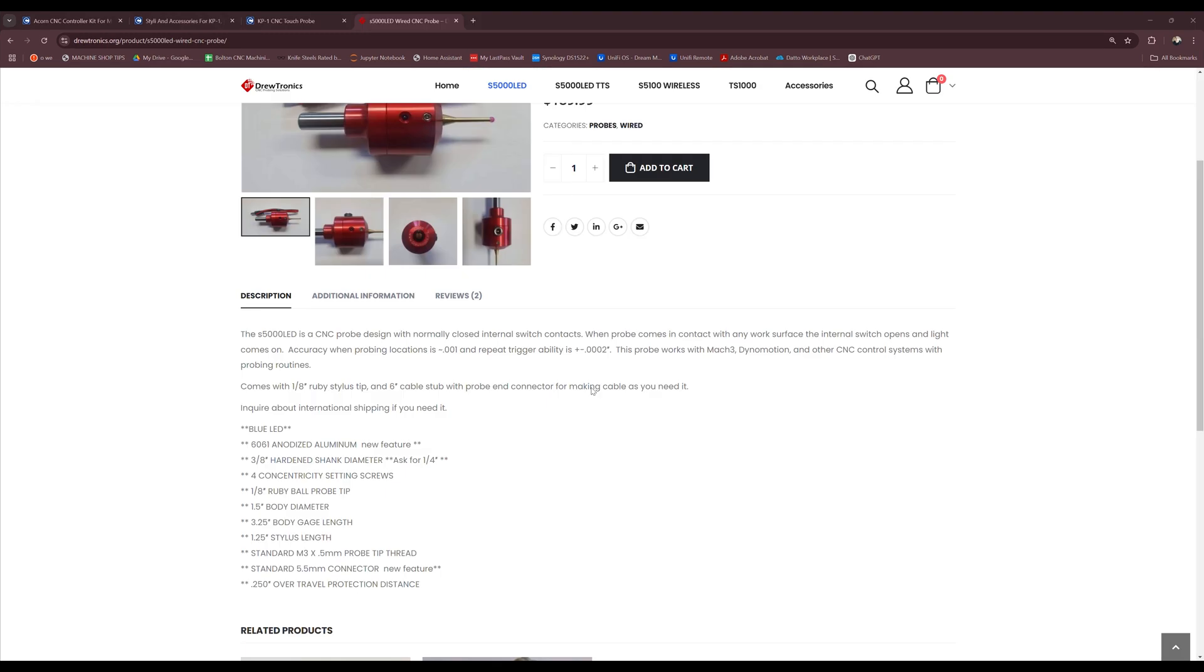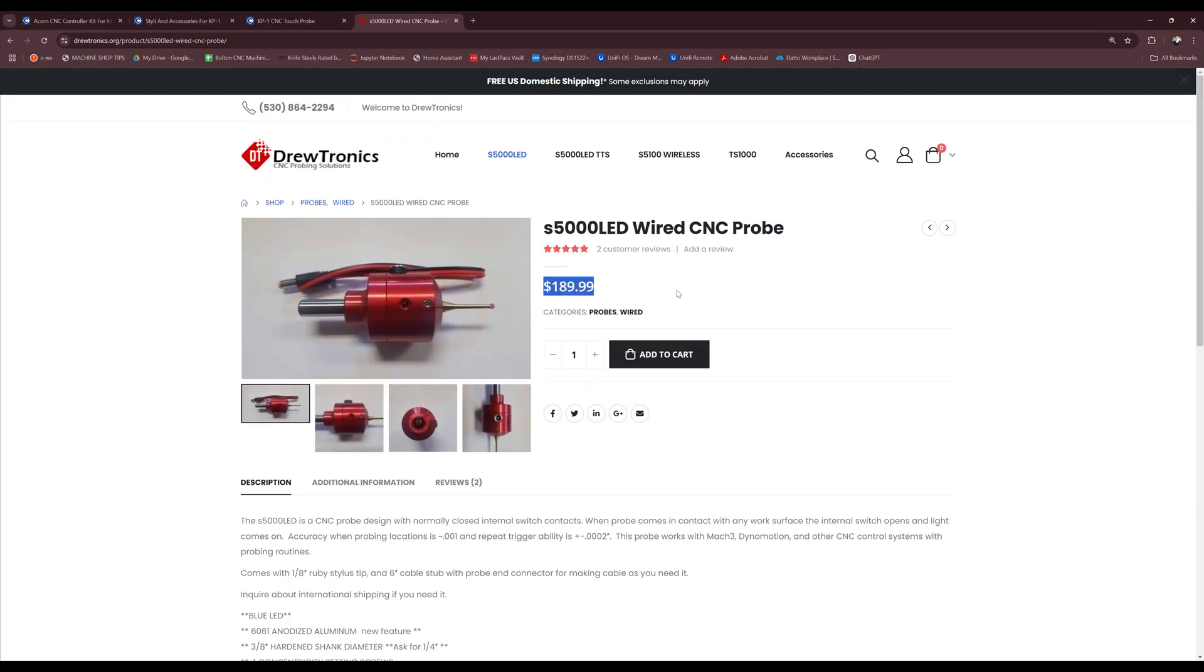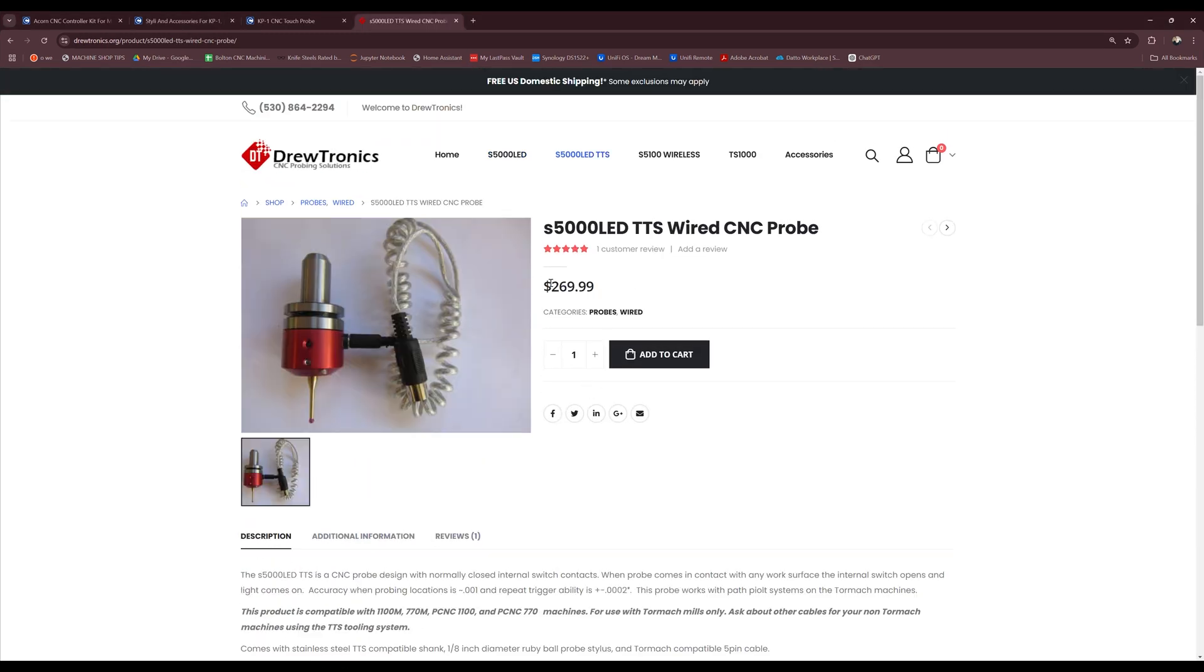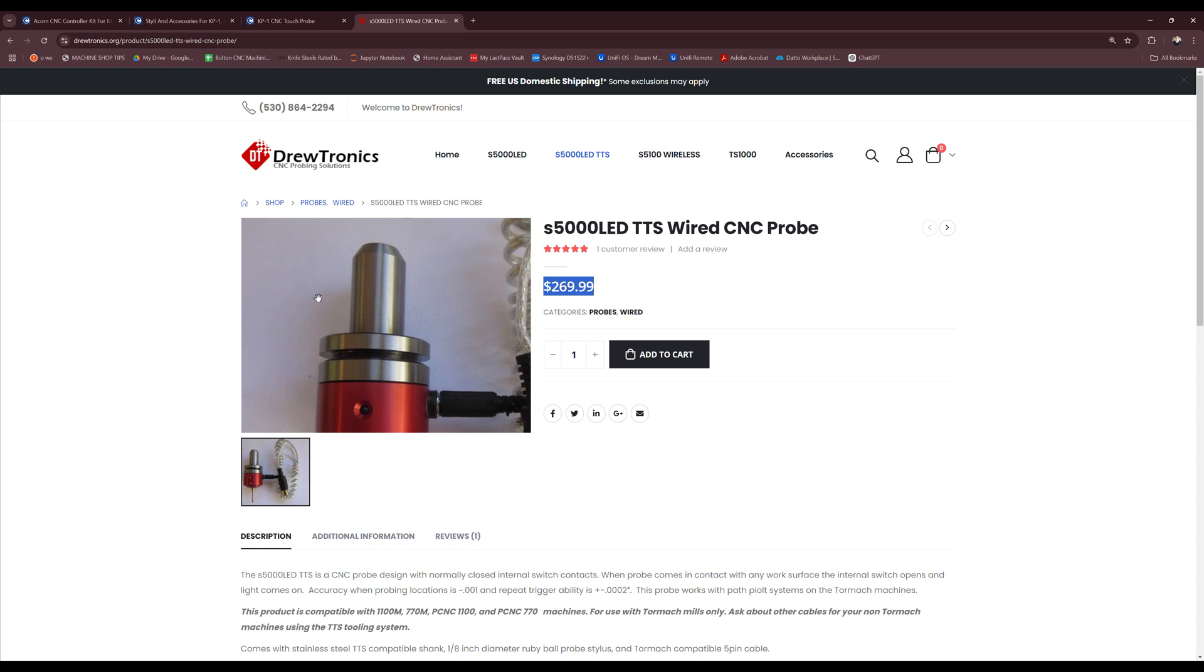Well the $350 KP1 retails for half the price of the $700 KP3. So that puts it in the same range as hobby probes like the Drutronics S5000s which go for $190 for the basic model or $270 for the TTS model which just means they have a shank compatible with the Tormach TTS tool holding system.